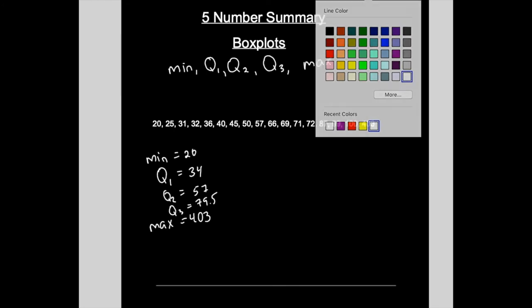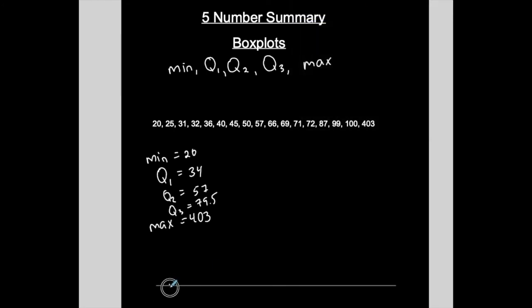Once you have a five number summary it's easy to just create a box plot. So 50, 100, 150, 200, 250, 300, 350, and 400. Okay so I'm starting at zero here and it'll keep going from there. So this is my scale.